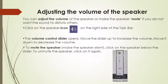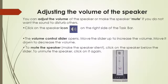Now let us learn how to adjust the volume of the speaker. You can adjust the volume of the speaker or make the speaker mute if you do not want the sound to disturb others. Click on the speaker icon on the right side of the taskbar. The volume control slider opens. Move the slider up to increase the volume and move it down to decrease the volume. To mute the speaker, click on the speaker below the slider. To unmute the speaker, click on it again.